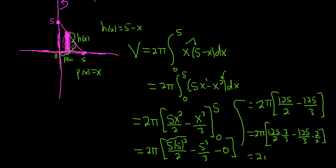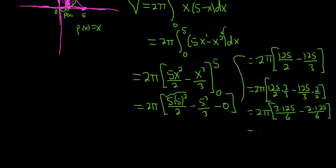So this is 2 pi, so it's 3 times 125 over 6 minus 2 times 125 over 6. Now you can subtract the numerators because the denominator is the same. So this is 2 pi, so this is 3 times 125, I'll show an extra step here, minus 2 times 125 over 6.